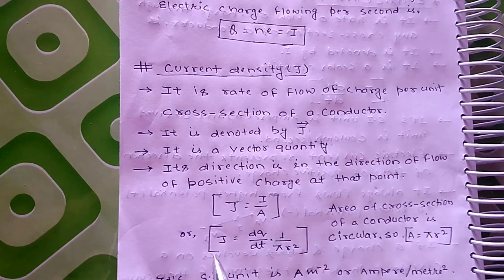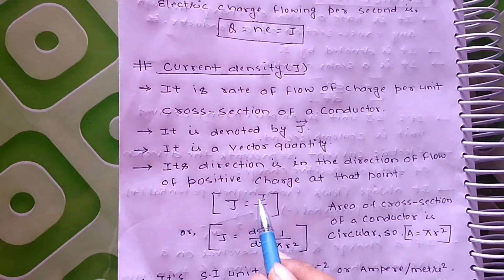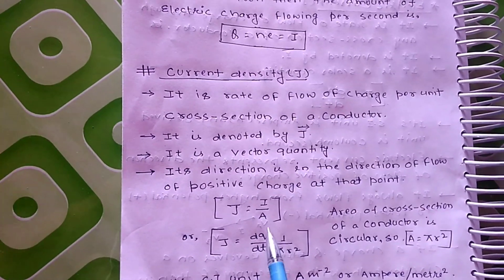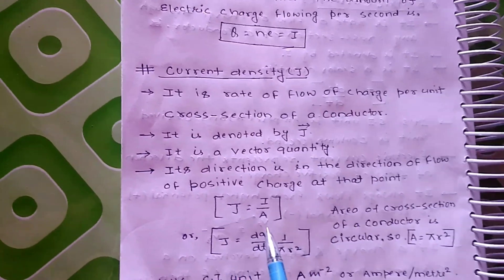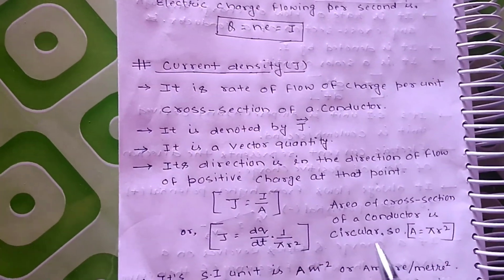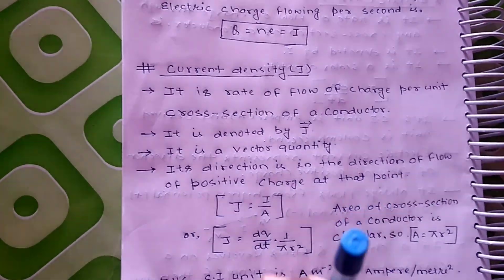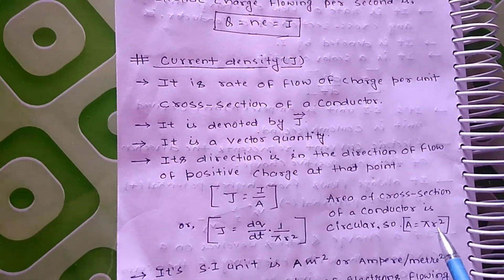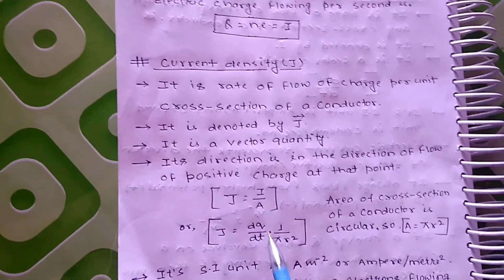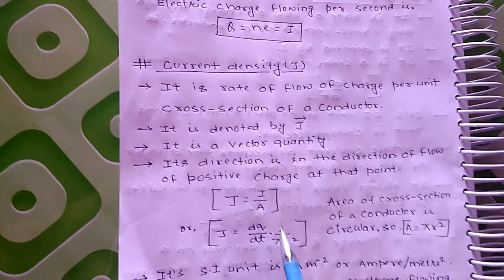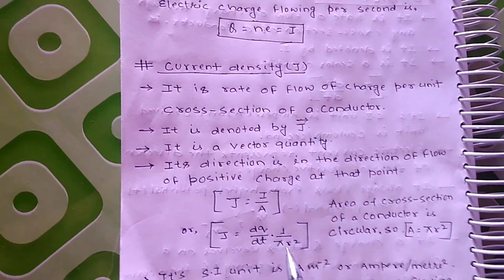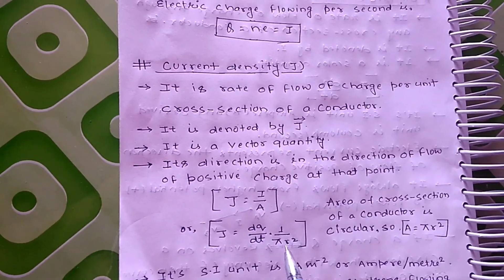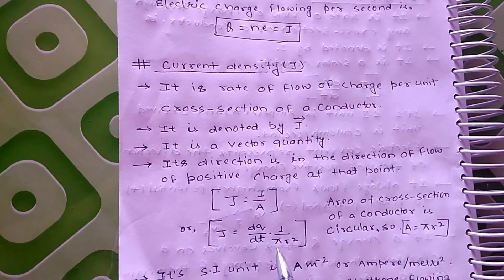J is equal to I upon A. Electric current को हम DQ upon DT लिखते हैं और A यानी area — अगर conductor के circular cross section की बात करें तो A का value pi r square होता है। तो J is equal to DQ upon DT into 1 upon pi r square, जहाँ r radius of conductor है और pi का value 3.14 है।